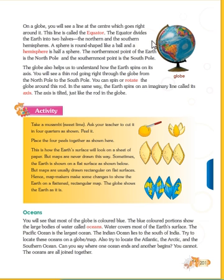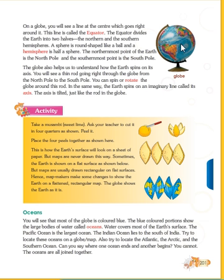A sphere is a round shape like a ball, and a hemisphere is half of a sphere. The northern hemisphere's most point of the earth is the North Pole, and the southernmost point is known as the South Pole. The northernmost point is called North Pole and the southernmost point is called South Pole.